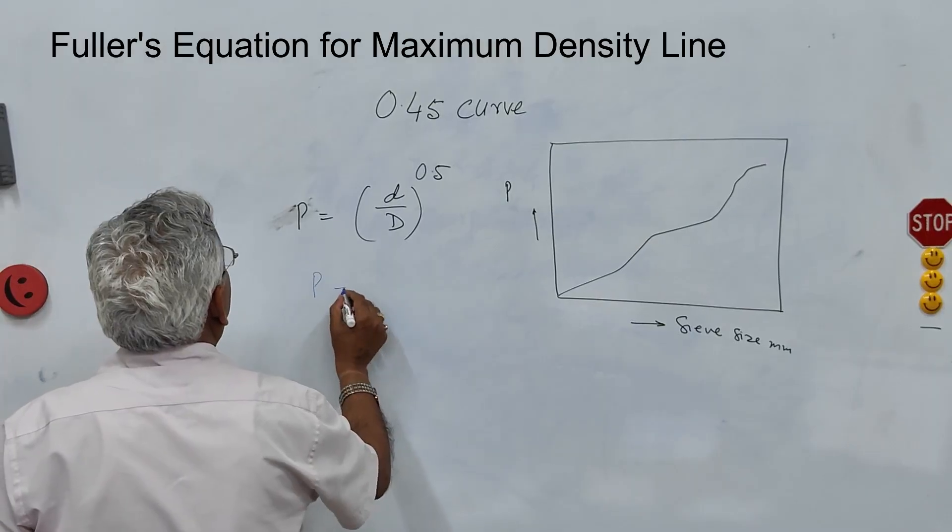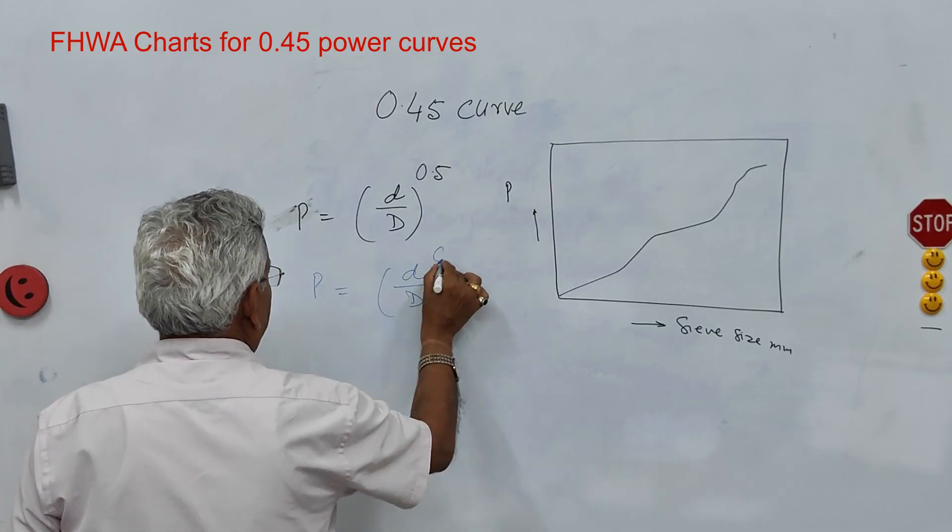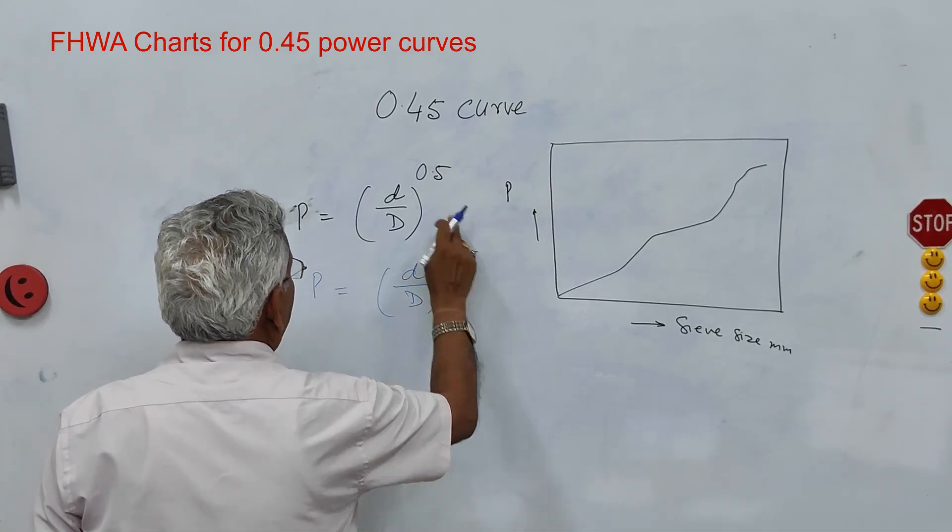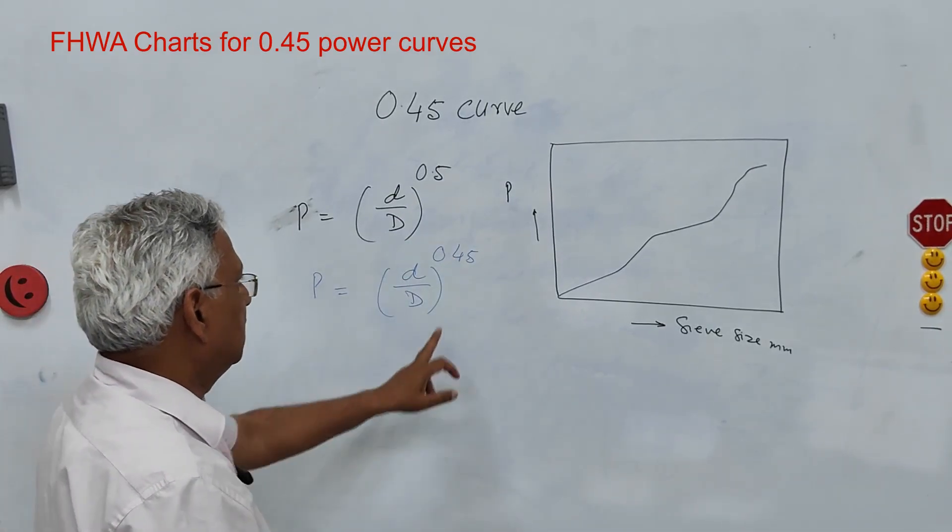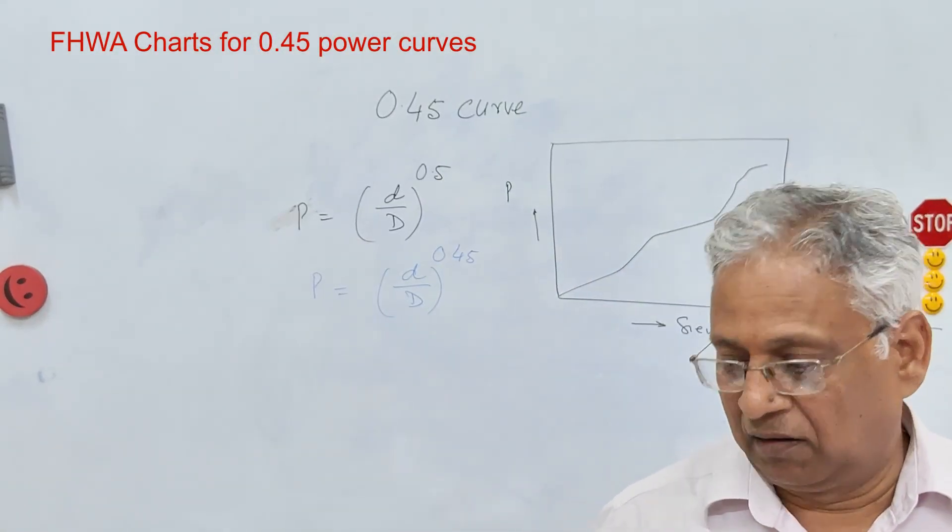Their equation is that P equals D upon D max power 0.45. This exponent is not 0.5 but it is 0.45 and that is called 0.45 curve.